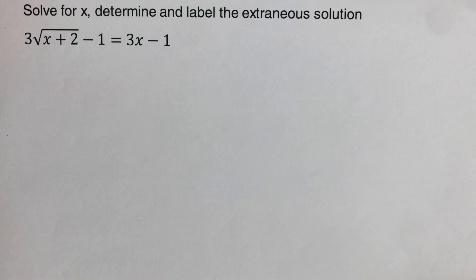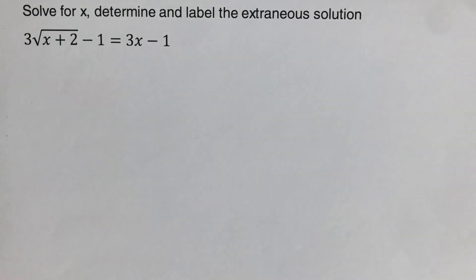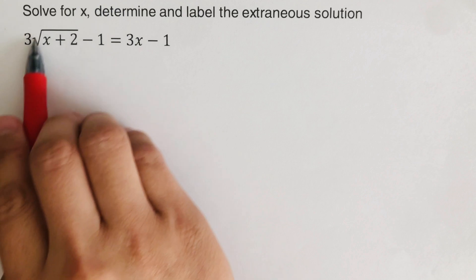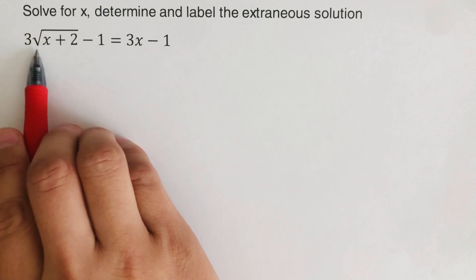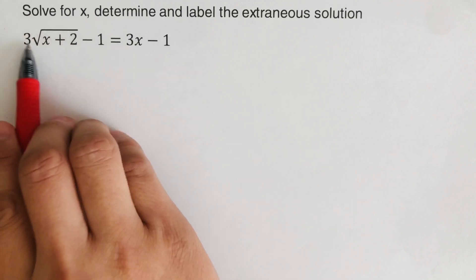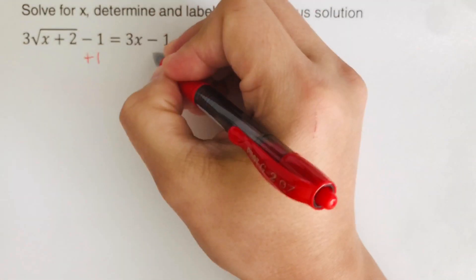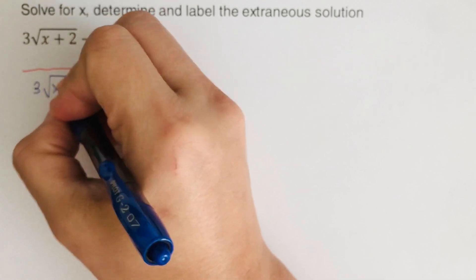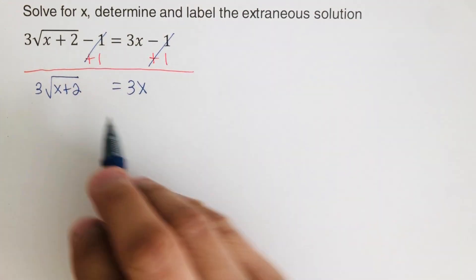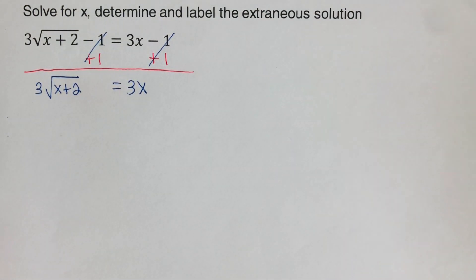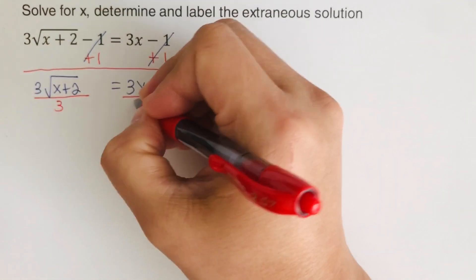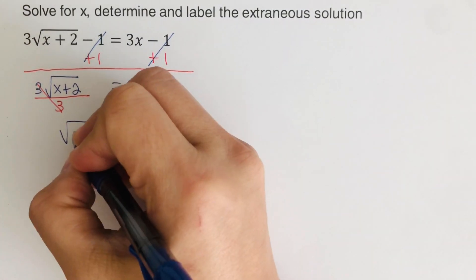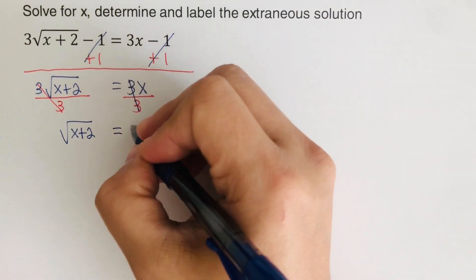For the second problem, the first step is to isolate the squared expression on one side. The equation is three square root of x plus two minus one equals three x minus one. The square root expression is not isolated because we have a negative one and a three in front of it. We add one to both sides, leaving three square root of x plus two equals three x. Then we divide both sides by three, giving us square root of x plus two equals x.